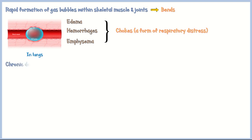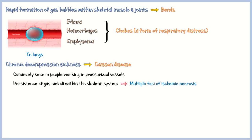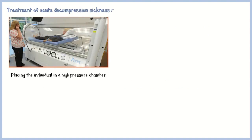The chronic form of decompression sickness is called caisson disease, commonly seen in people working in pressurized vessels. Persistence of gas emboli within the skeletal system leads to multiple foci of ischemic necrosis; the femoral heads, tibia, and humerus are the commonly affected sites. Acute decompression sickness is treated by placing the individual in a high-pressure chamber, which forces gas bubbles back into solution, followed by slow decompression to permit gradual exhalation of excess gas via the lungs.